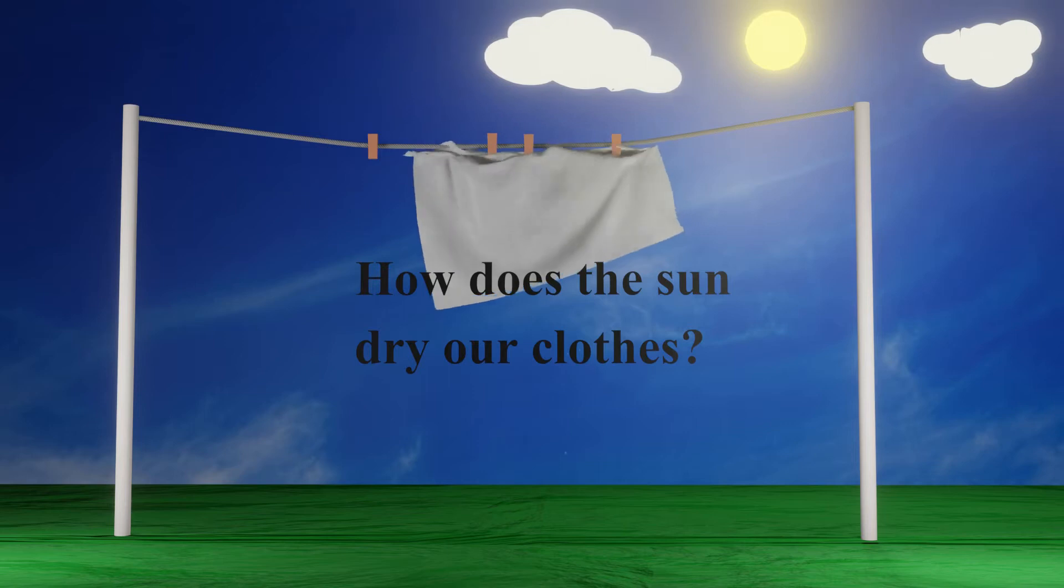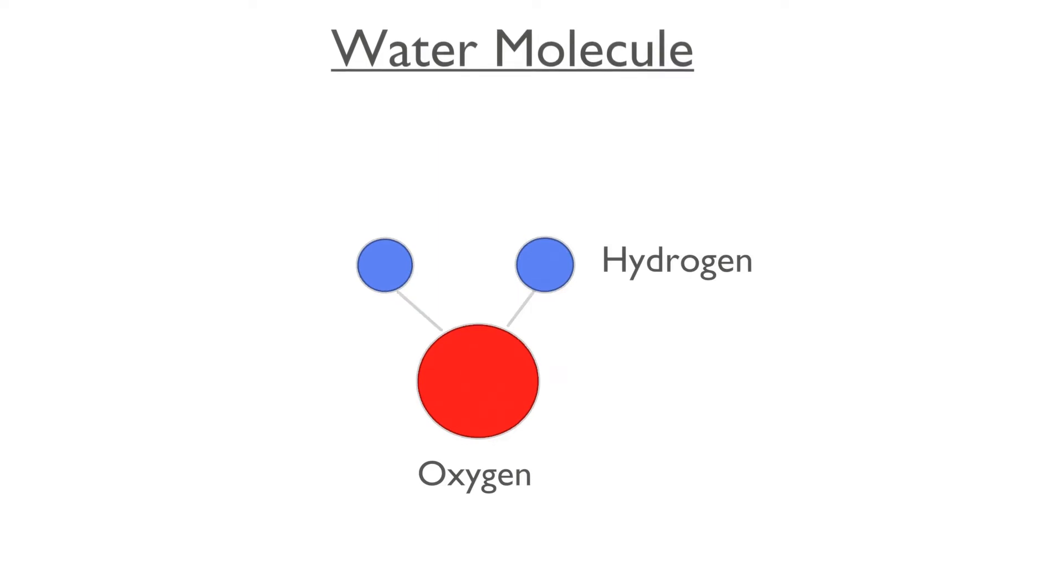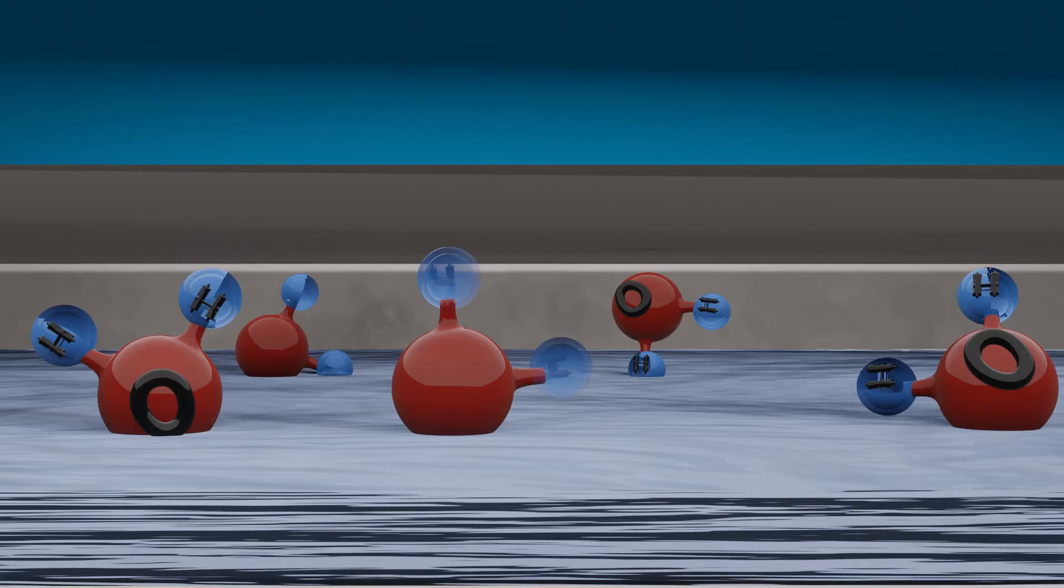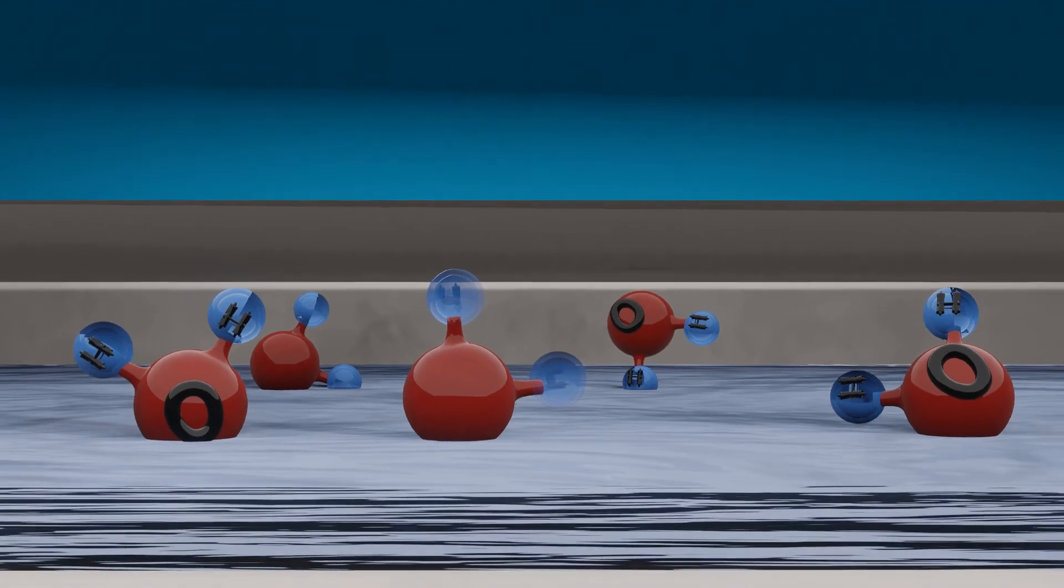Let's begin. A water molecule contains one atom of oxygen and two atoms of hydrogen. A single drop of water contains millions of such molecules. Now let us look into how the sunlight reacts with water molecules.